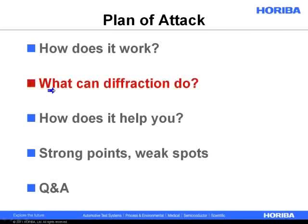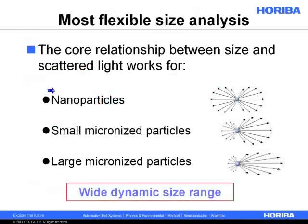Now we're going to move on to what are the limits of this measurement. One of the reasons diffraction has become so very widespread and popular is because it's a very flexible size analysis. The largest part of that is it can measure so many different sizes of materials. Dynamic light scattering is really just nanoparticle-only, whereas laser diffraction can go down as far as 30 nanometers and up as far as several millimeters. It's a very wide dynamic range.